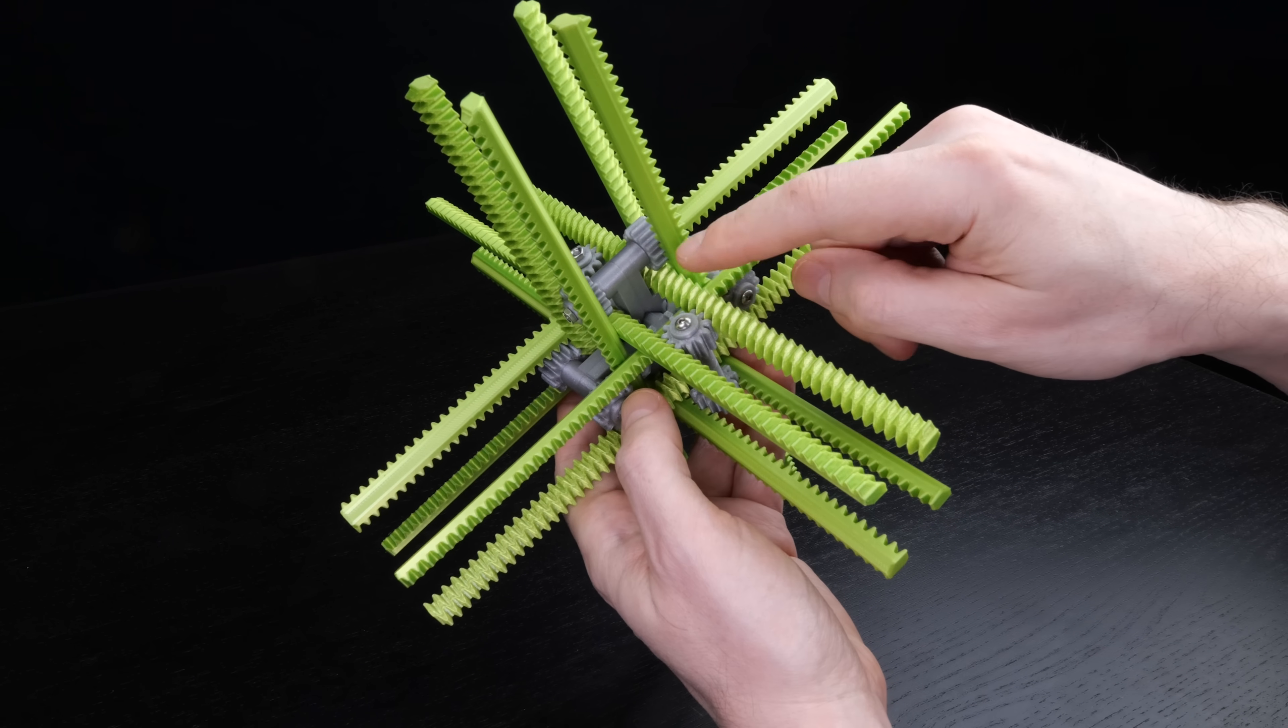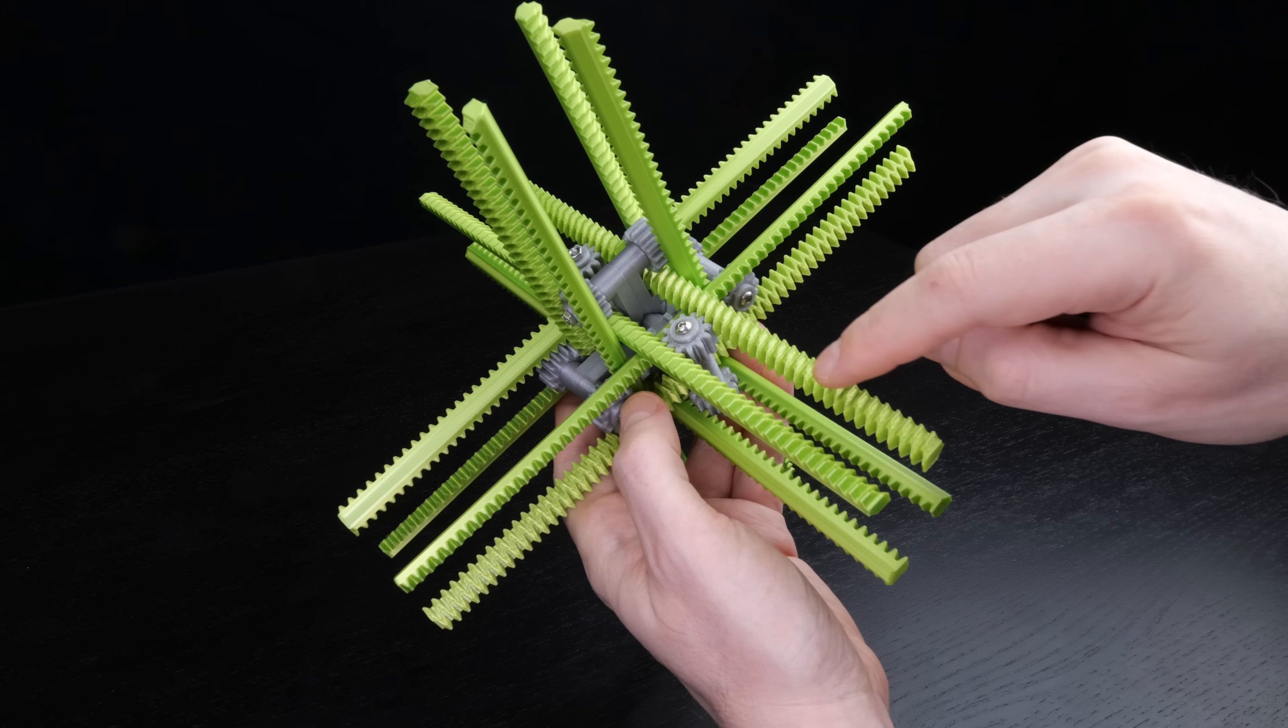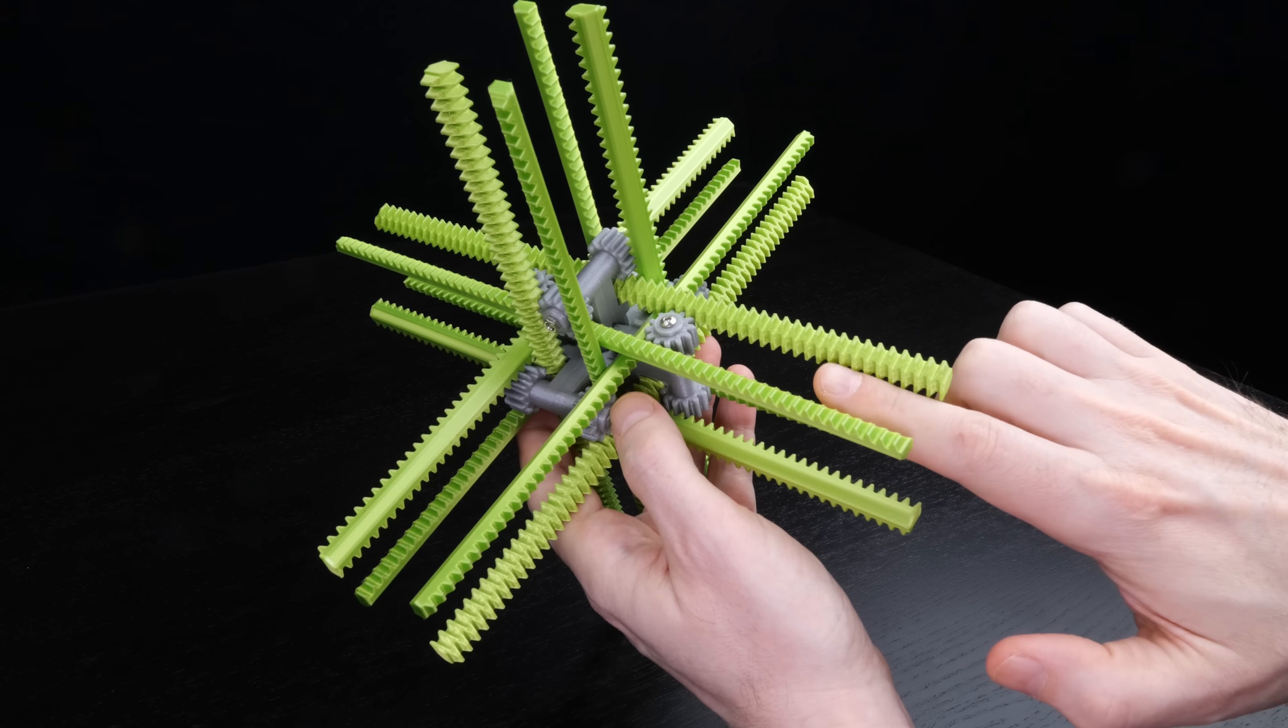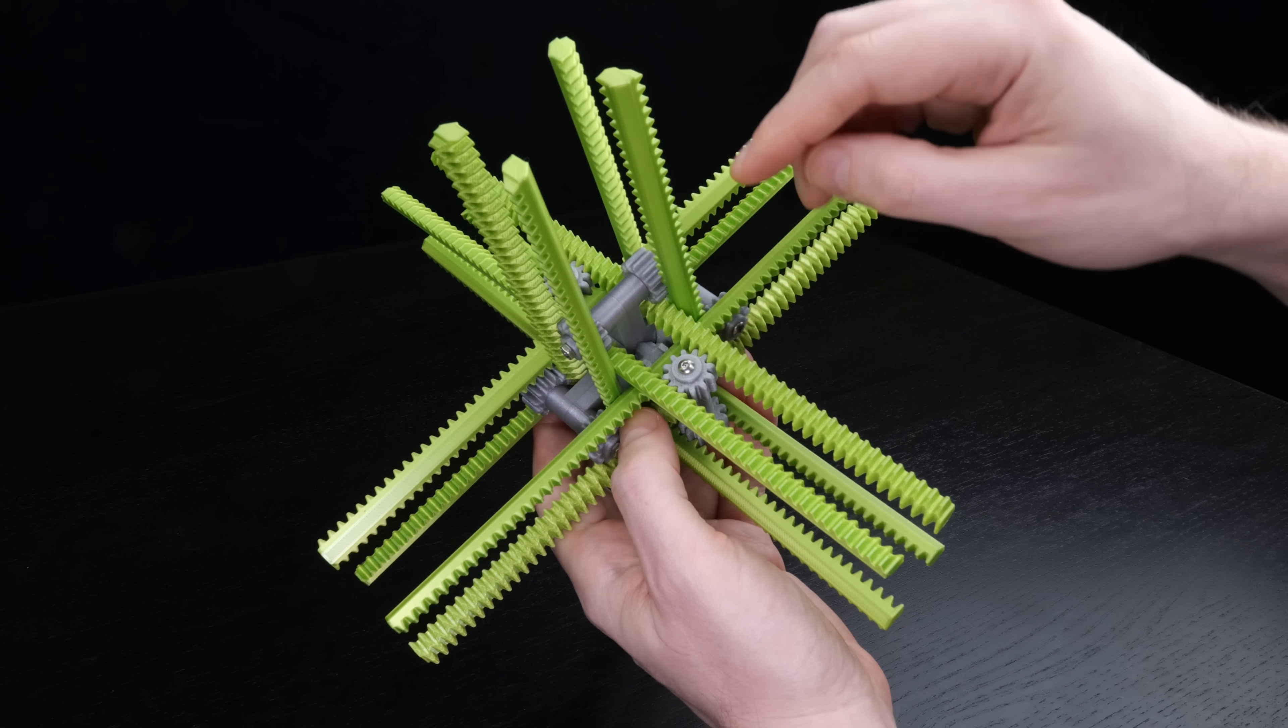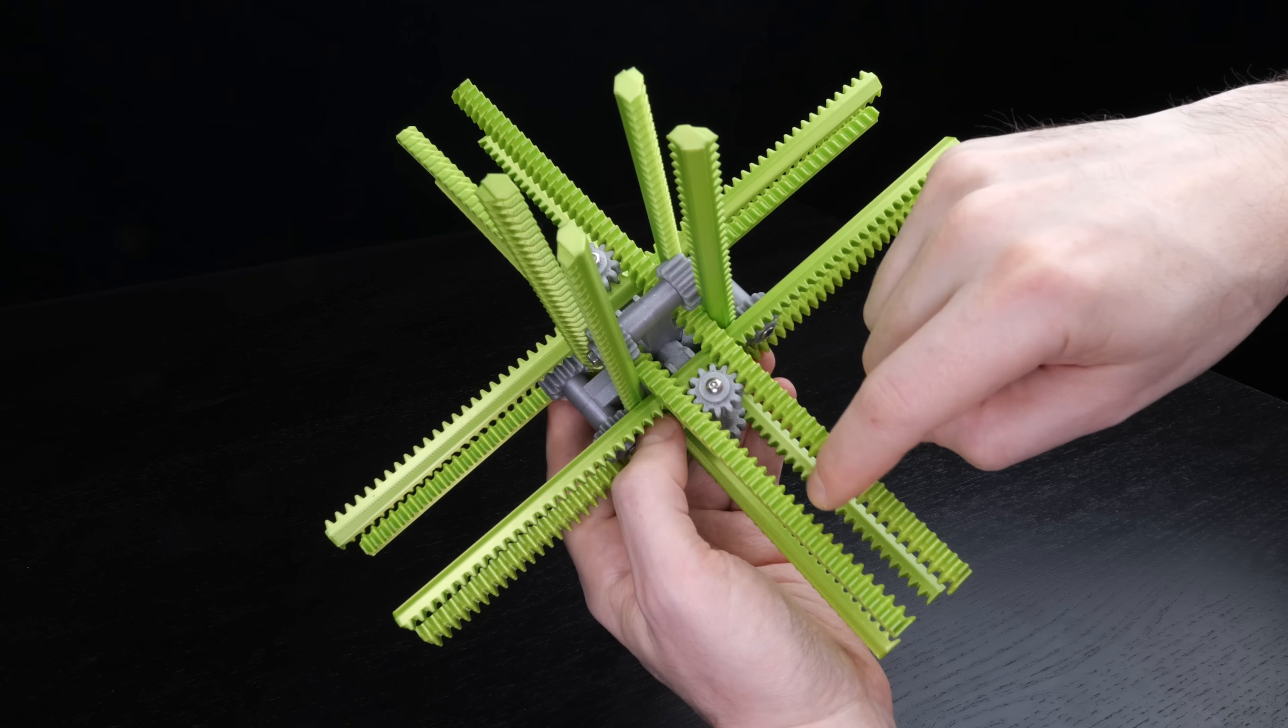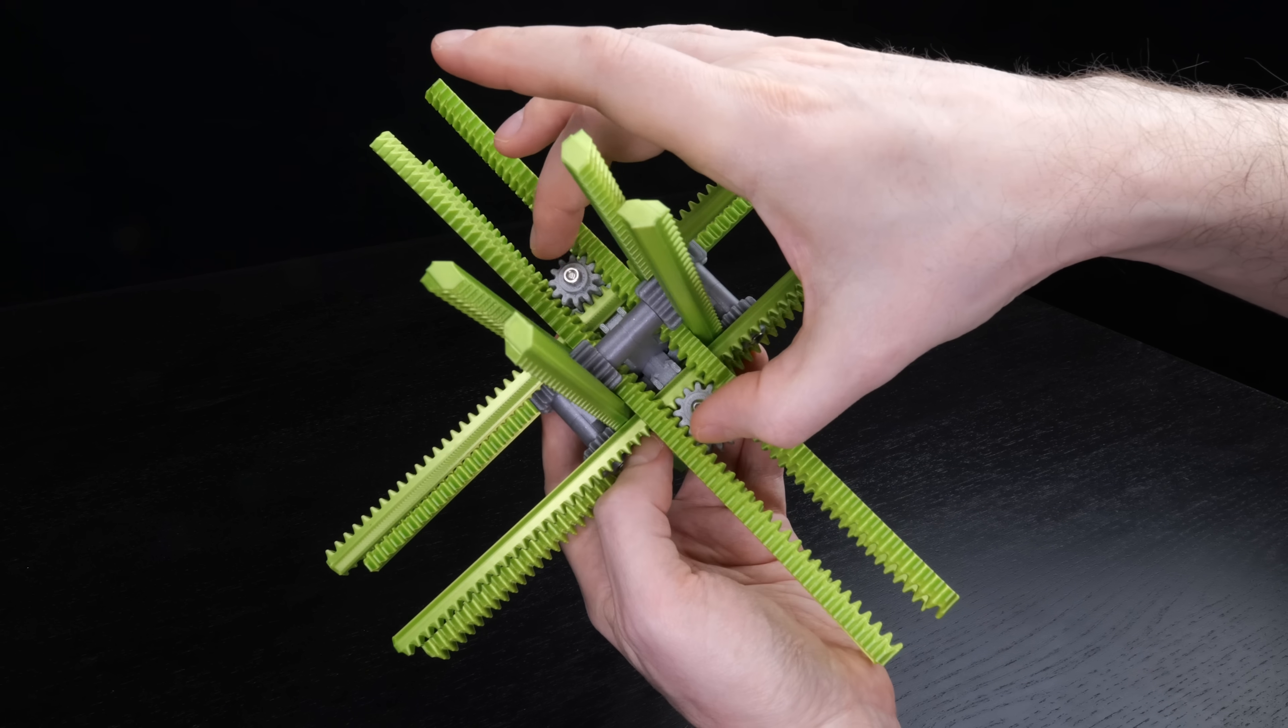Each stick has two racks on it. So this stick here has a rack on its top, and then another rack on the inside here. So the rack on the top meshes with this gear here, while the rack on the inside meshes with these two gears here.